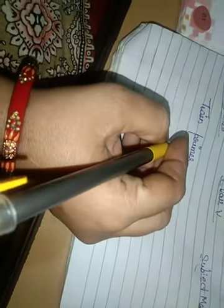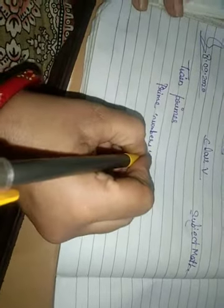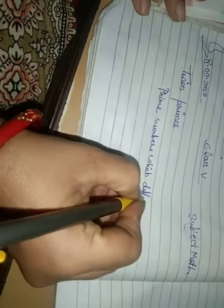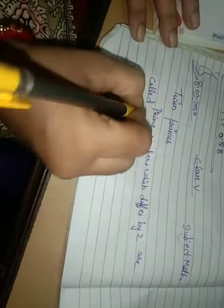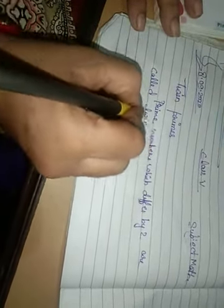Prime numbers which differ by 2 are called twin primes. So write the definition as classwork: Prime numbers which differ by 2 are called twin primes.